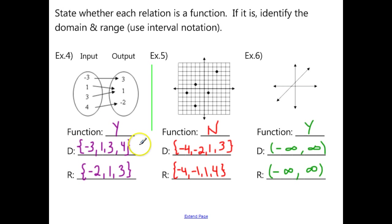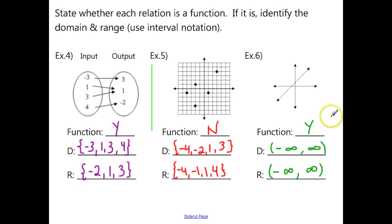For example four, it is a function. The domain in braces is: negative 3, 1, 3, and 4. The range in braces is: negative 2, 1, and 3. Number five is not a function. The domain is: negative 4, negative 2, 1, 3. The range is: negative 4, negative 1, 1, 4. Example six is a function. The domain is negative infinity to positive infinity with parentheses, and the range is also negative infinity to positive infinity with parentheses.